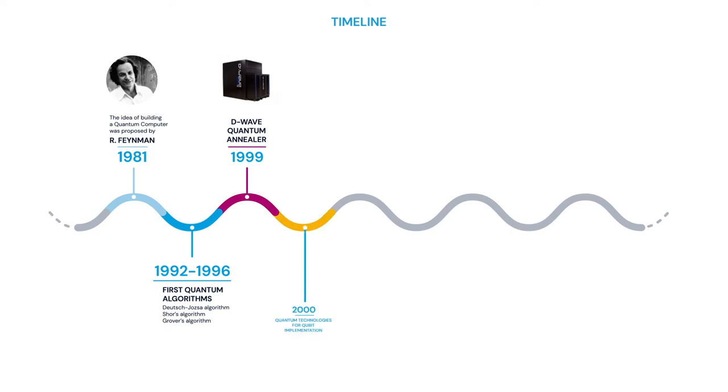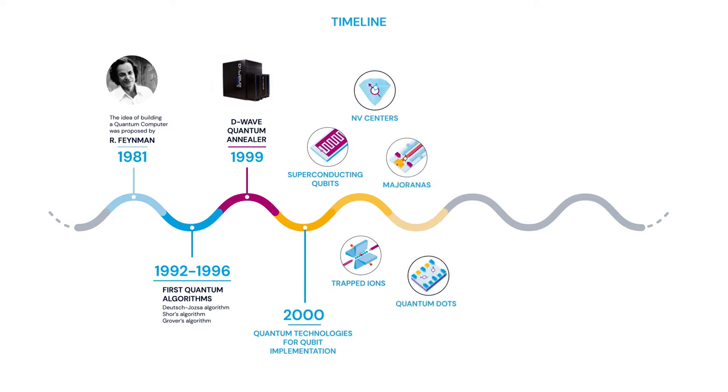Nowadays, there are different quantum technologies that are being explored and used for the implementation of qubits. Some examples are superconducting qubits, trapped ions, quantum dots, NV centers, or Majorana qubits. As we will see later, we are in the NISQ era in which error-prone quantum processors consisting of a few tens of qubits already exist.